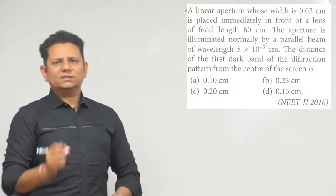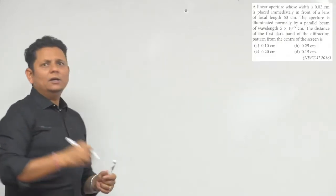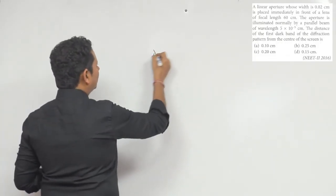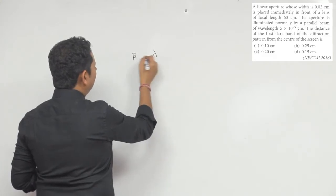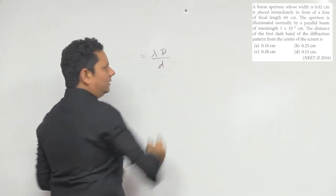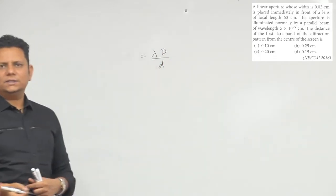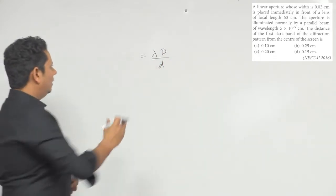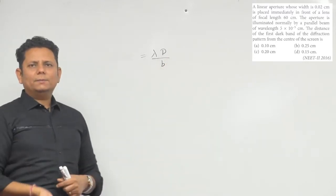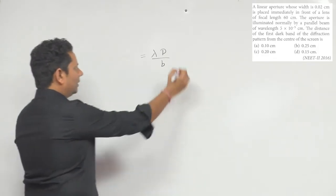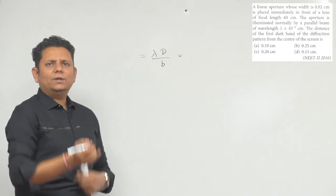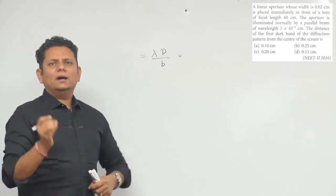This is a direct formula question. We can write the location of the first minima. All the data is given, so we just need to substitute. Lambda given to us is 5×10⁻⁵ centimeter.